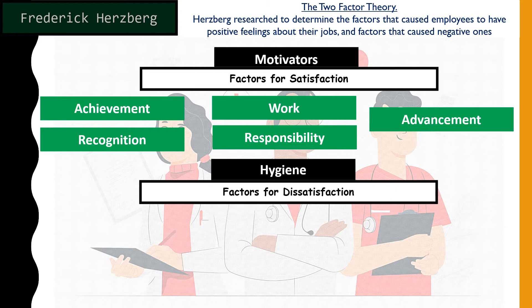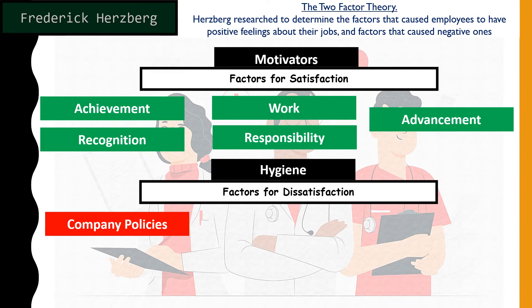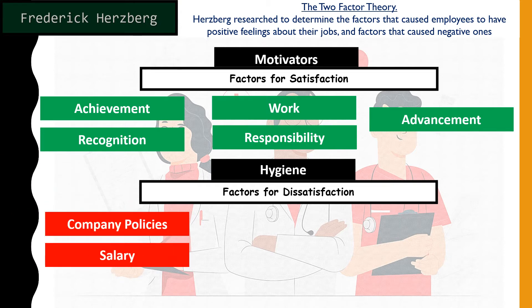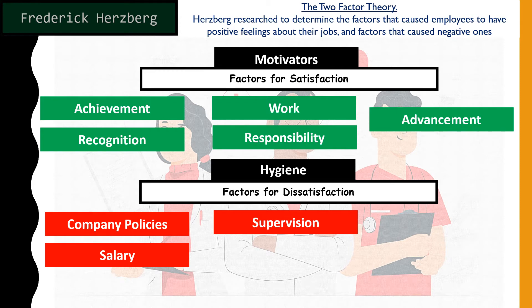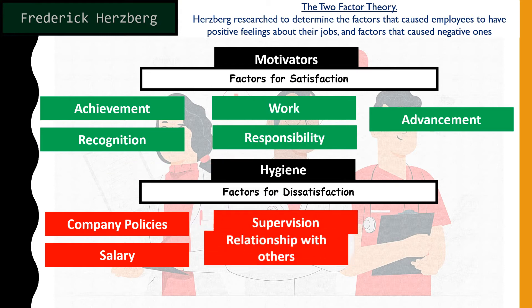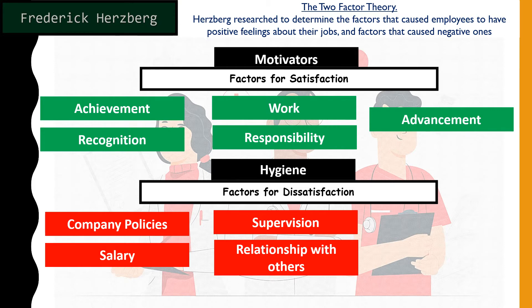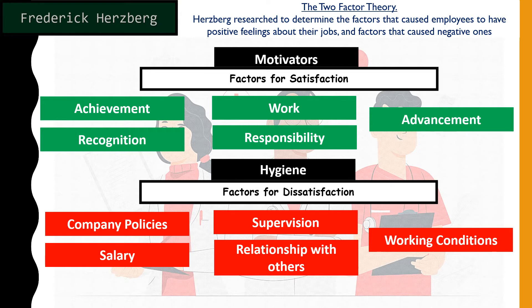Now let's look at the hygiene factors — the factors that cause dissatisfaction. Employees say company policies, perhaps very strict and stringent ones, make them feel unhappy. Salary is also a factor: being too low or underpaid affects how they feel. Supervision that is too strict or micromanaging also causes unhappiness. Relationship with others — the working environment, communication level, and trust within the organization — also evokes dissatisfaction if the relationship is bad.